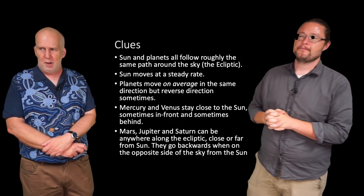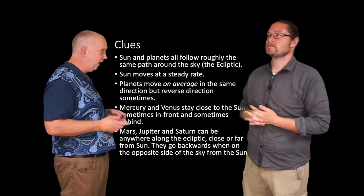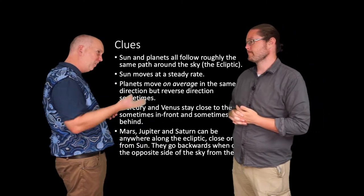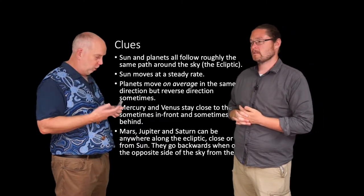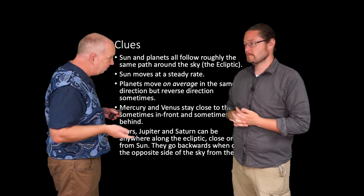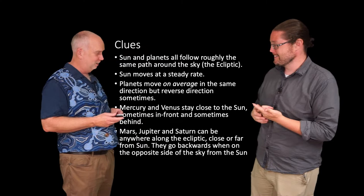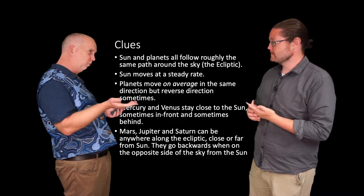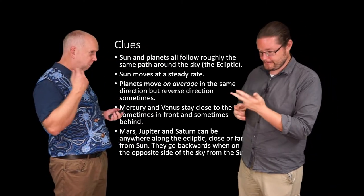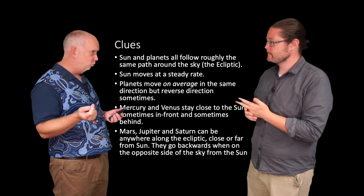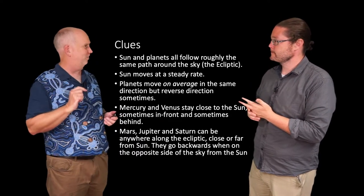So we've got clues. They all move on the same track. They're wandering, on average they go the same direction. We know that some things can move around Jupiter, and with better telescopes we know there are also moons moving around some other things as well. They normally go forwards, but sometimes they go backwards. Now Mars, Jupiter, Saturn only do their backward motion when they're opposite side of the sky to the Sun.